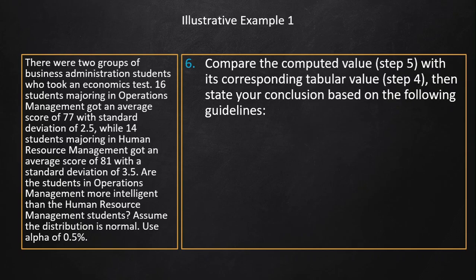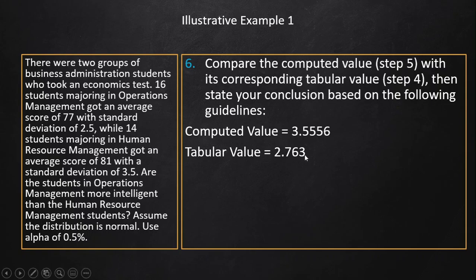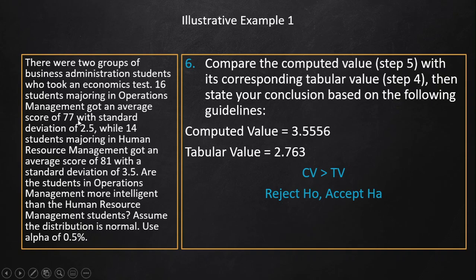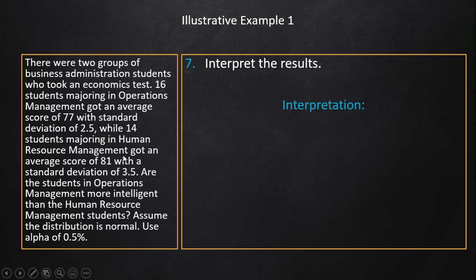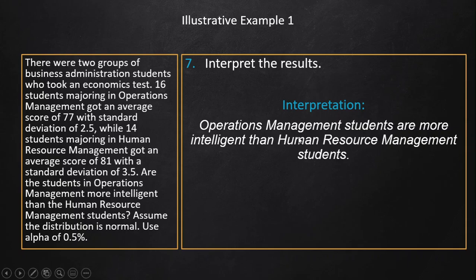Step 6: Compare the computed value and the tabular value. The computed value is 3.5556 and the tabular value is 2.763. Therefore, we accept the alternative hypothesis — there is a significant difference between the two mean scores, meaning operations management students are more intelligent than human resource management students based on their scores. Note: this is hypothetical data and not a generalization.